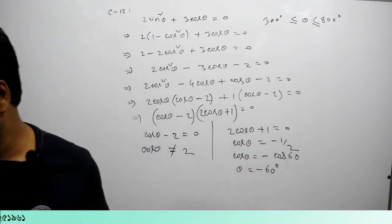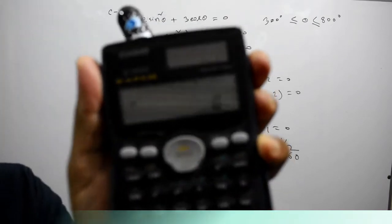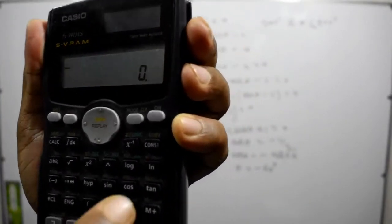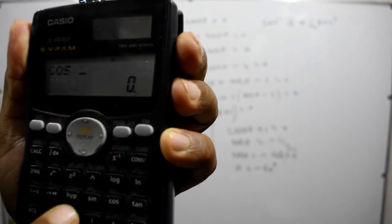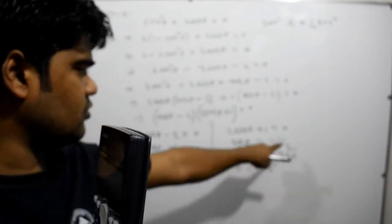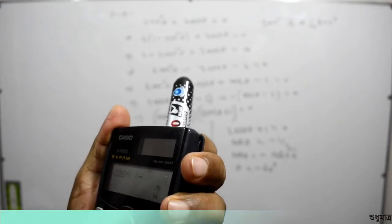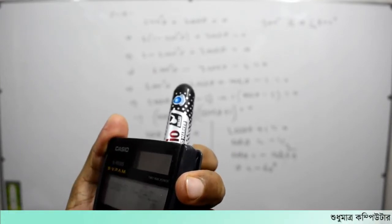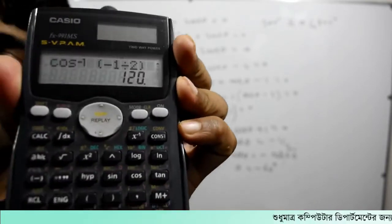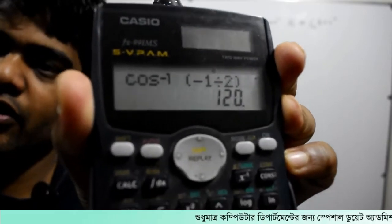Calculate. Cos. Cos inverse. Cos inverse. Cos inverse of minus 60 degrees.